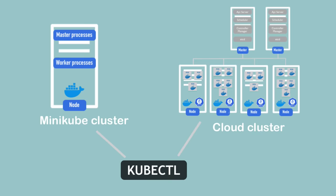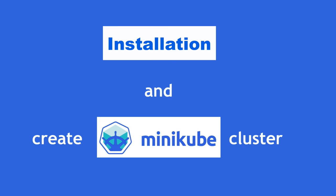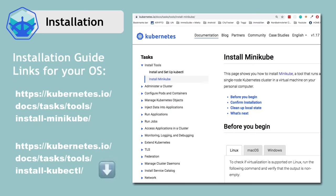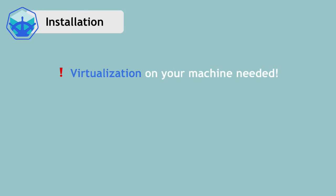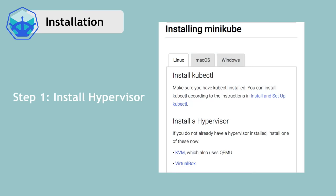Now that we know what Minikube and kubectl are, let's actually install them to see them in practice. I'm using Mac, so the installation process will probably be easier, but I'll put links to installation guides in the description so you can follow them on your operating system. One thing to note: Minikube needs virtualization because it's going to run in a virtual box setup or some hypervisor. So you will need to install some type of hypervisor — it could be VirtualBox. I'm going to install HyperKit.